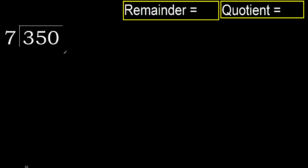350 divided by 7. 3 is less, therefore next. 35 is not less, therefore with 35.